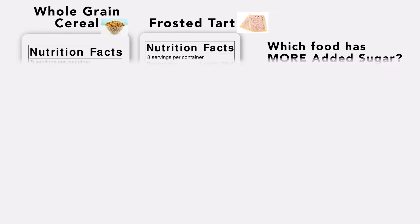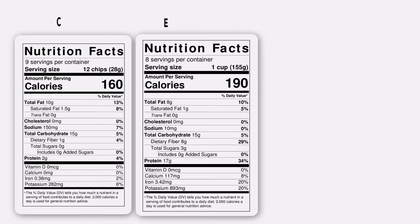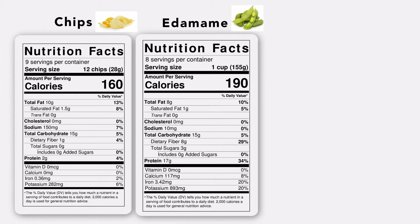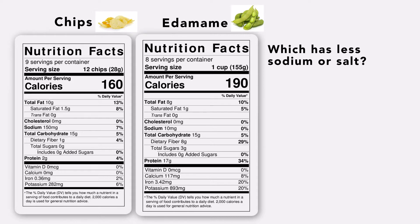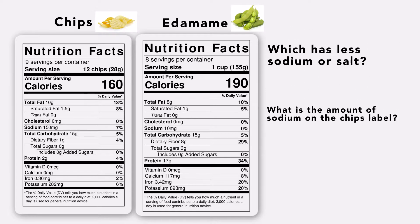Now let's take a look at the chips label on the left and the edamame label on the right. Which food has less sodium or salt? What is the amount of sodium on the chips label?